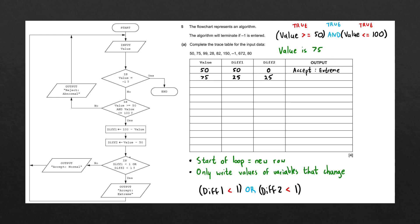For the next decision block, we evaluate: diff1 is 25, which is not less than 1, so this evaluates to false. The value of diff2 is also 25, which is not less than 1, so this also evaluates to false. Since both sides of the OR operator are false, we follow the no arrow. We get to the output statement which says 'accept: normal'. So under the output column, we write 'accept: normal'.